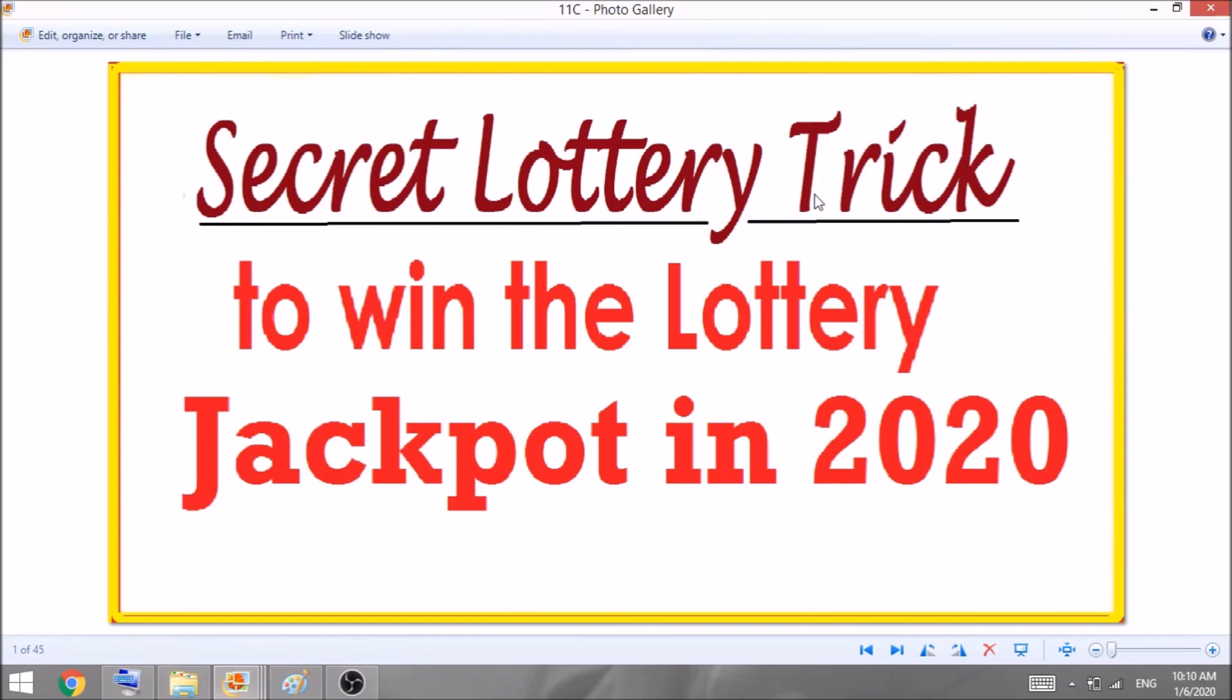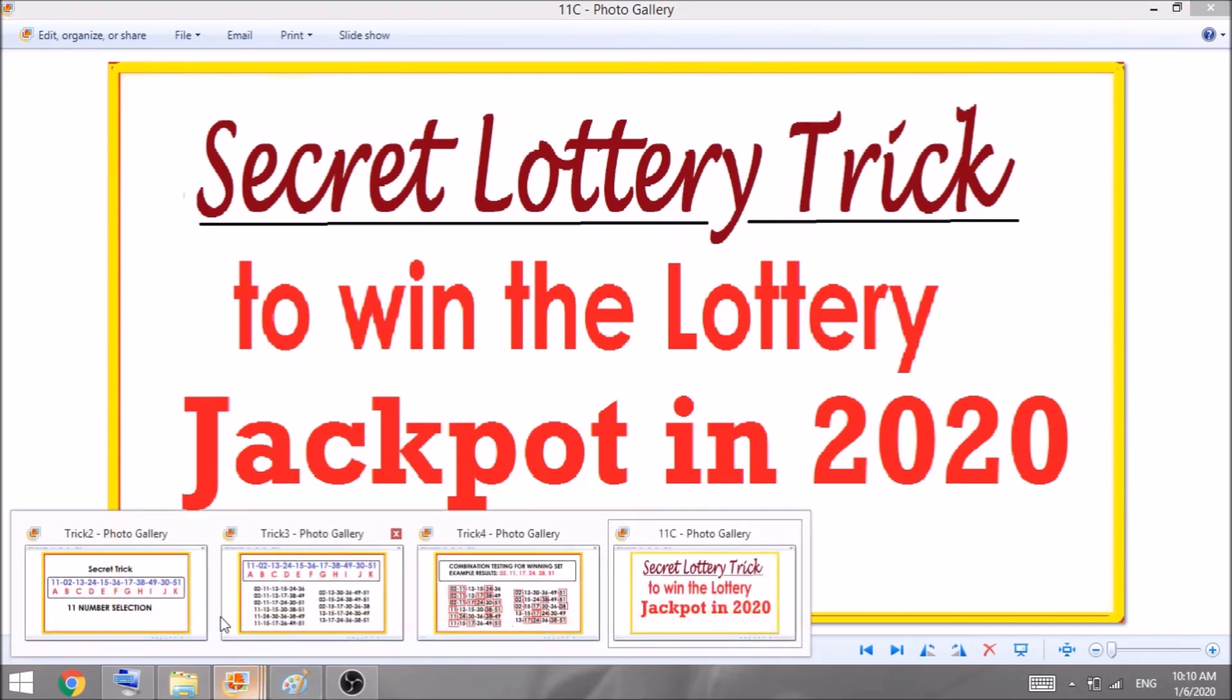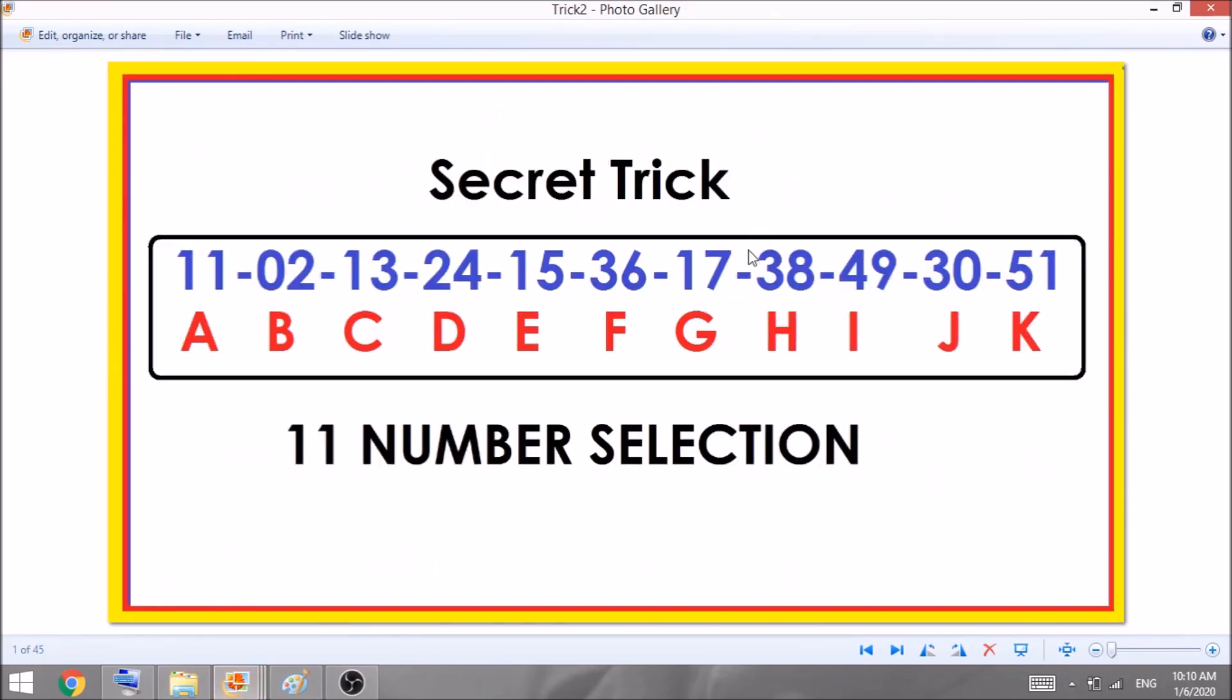On this strategy we will occupy 11 numbers and generate 11 combinations. Based on this example, my choosing numbers are 11, 2, 13, 24, 15, 36, 17, 38, 49, 30, and 51.